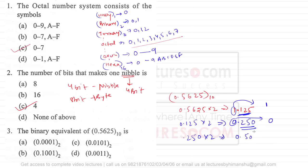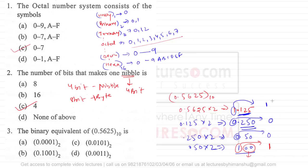Continuing: 0.50 × 2 = 1.00 — we take 1. Because we got 1.00, multiplying further always gives 0, so this last digit is 1. Reading the digits in order: 0.1001. Therefore the binary equivalent is 0.1001 base 2, which is option B.